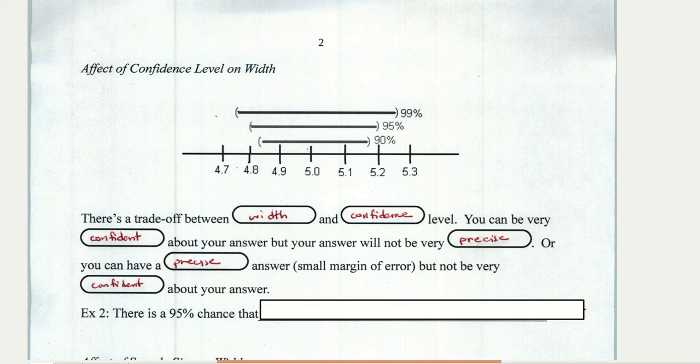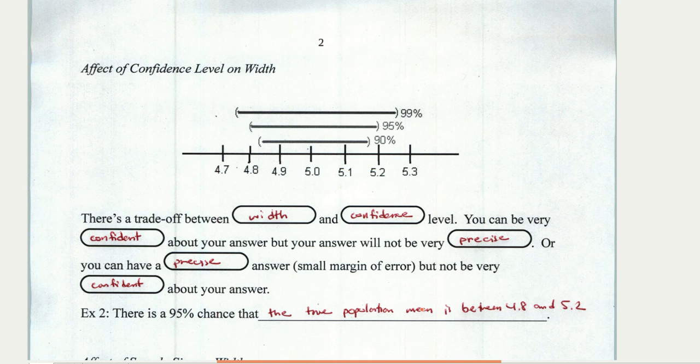So looking at this example, we can see that the 95% confidence interval lines up pretty well with those numbers on the number line there. So we could say that there is a 95% chance that the true population mean is between 4.8 and 5.2.